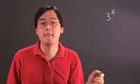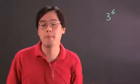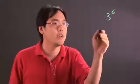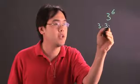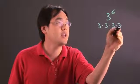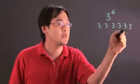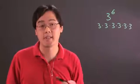For example, if you have 3 to the sixth power, that means you're taking the number 3 and you're multiplying it by itself six times. So what this means is you have 3 times 3 times 3 times 3 times 3 times 3 — there's going to be 6 of those.